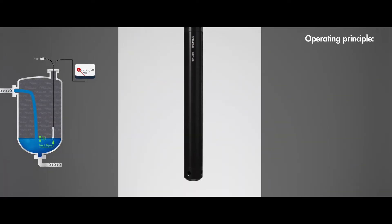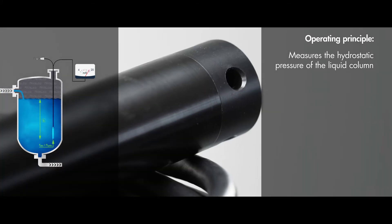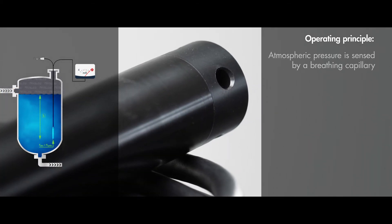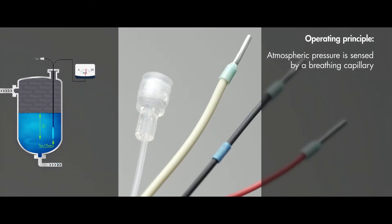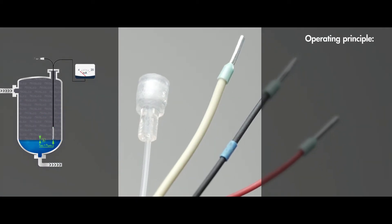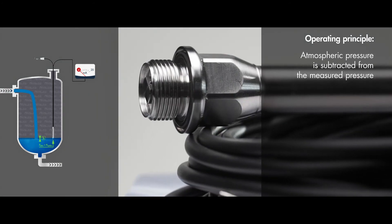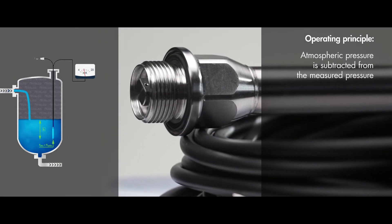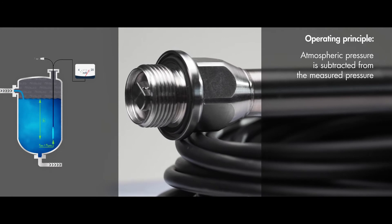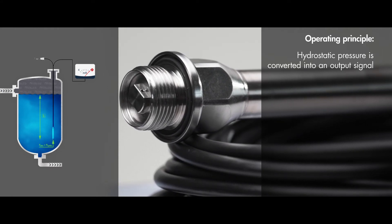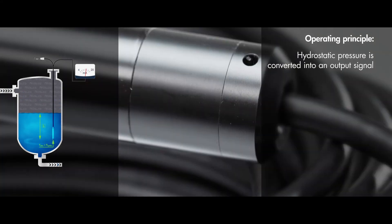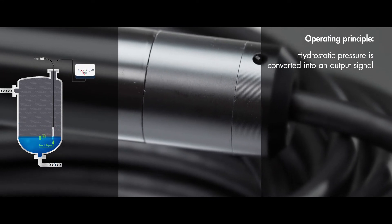Operating Principle. The pressure sensor at the bottom of the probe measures the hydrostatic pressure of the liquid column above it and compares with the atmospheric pressure. The atmospheric pressure is led to the sensor through a breathing capillary. The atmospheric pressure is subtracted from the measured pressure to get the hydrostatic pressure, which is proportional to the height of the liquid column. The electronics converts the sensor's signal into an output signal.